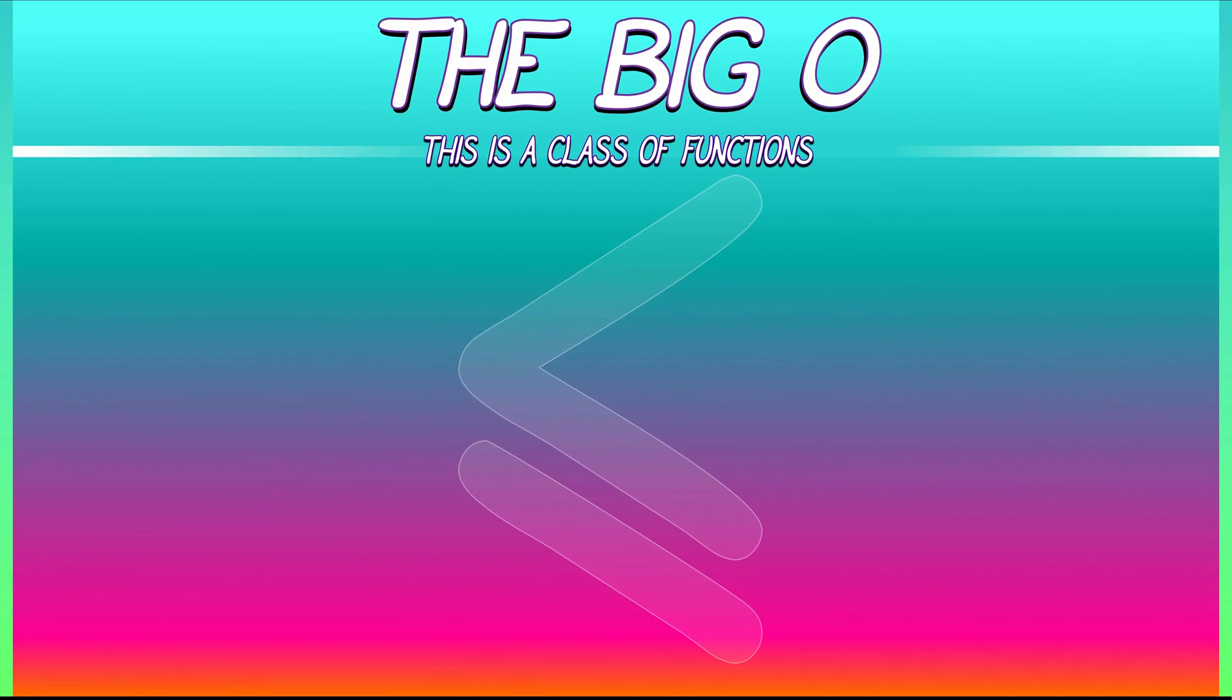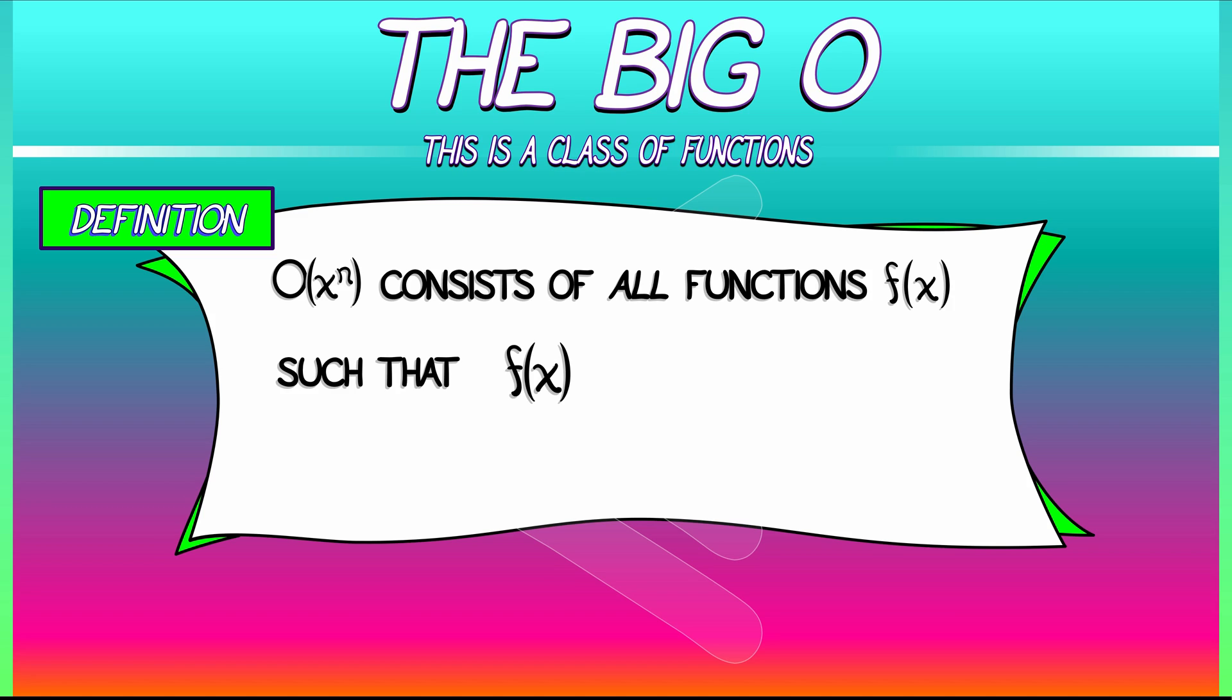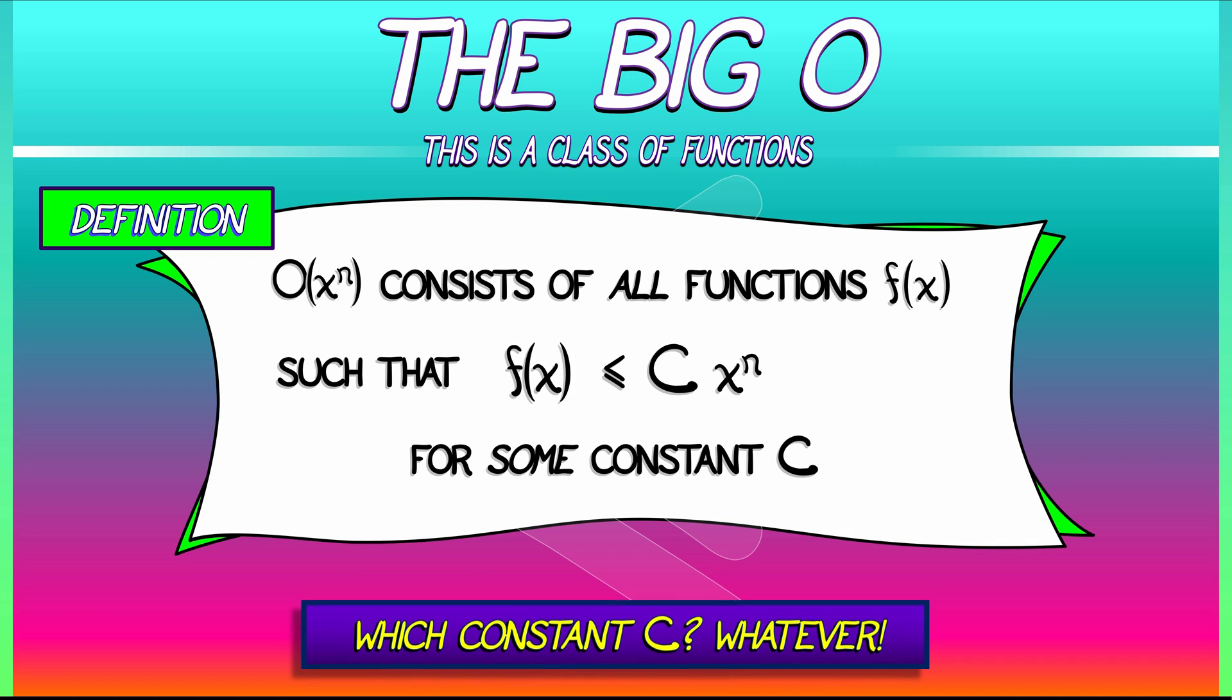This big O is not itself a function. It is a class of functions. The definition of big O of x to the n is the class of all functions f of x, such that f of x is less than or equal to some constant c times x to the n. Now, this is for some constancy. What constancy is it? Whatever. We don't care. It's just some constant.